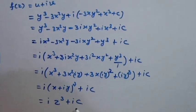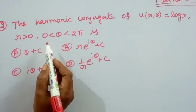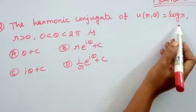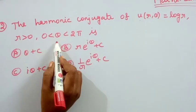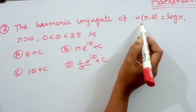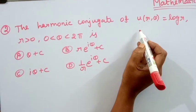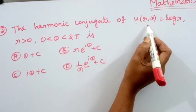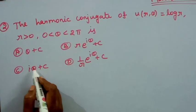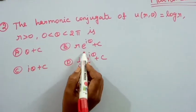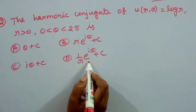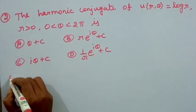The answer is iz cube plus ic, so option D is correct. The second problem: find the harmonic conjugate of u of r, theta equal to log r, where r greater than 0 and theta lies between 0 to 2pi. The four options are: theta plus c; r e power i theta plus c; i theta plus c; and 1 by r e power i theta plus c.